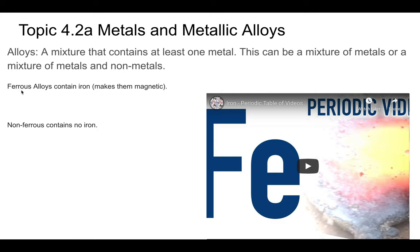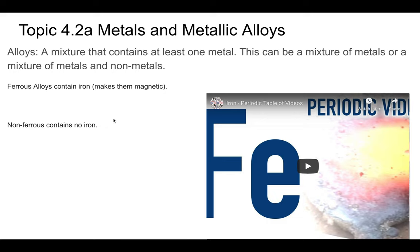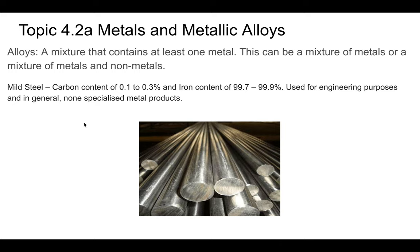When you see the word 'ferrous,' it usually has something to do with iron — this is why the chemical symbol for iron is Fe. There's a short video by the University of Nottingham showing a chemical reaction producing iron. Ferrous alloys contain iron, while non-ferrous alloys do not. Ferrous alloys are also magnetic because iron is magnetic.